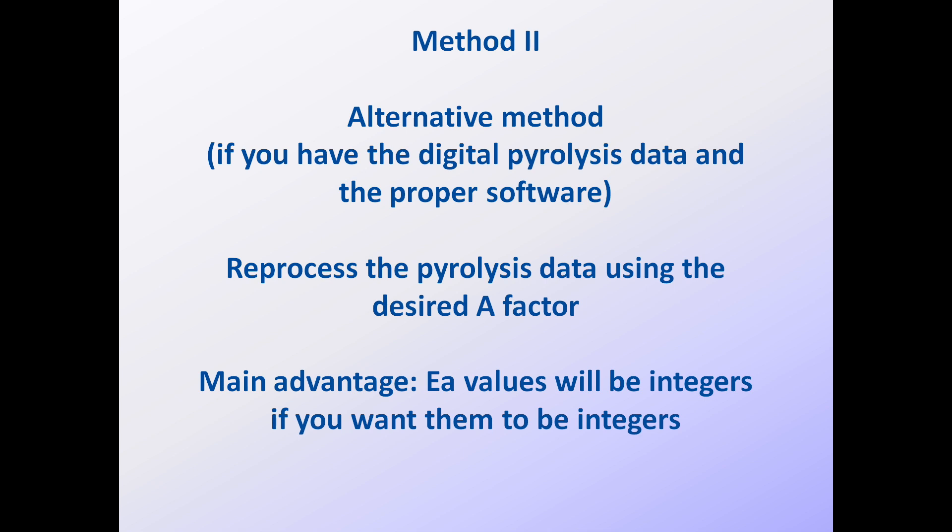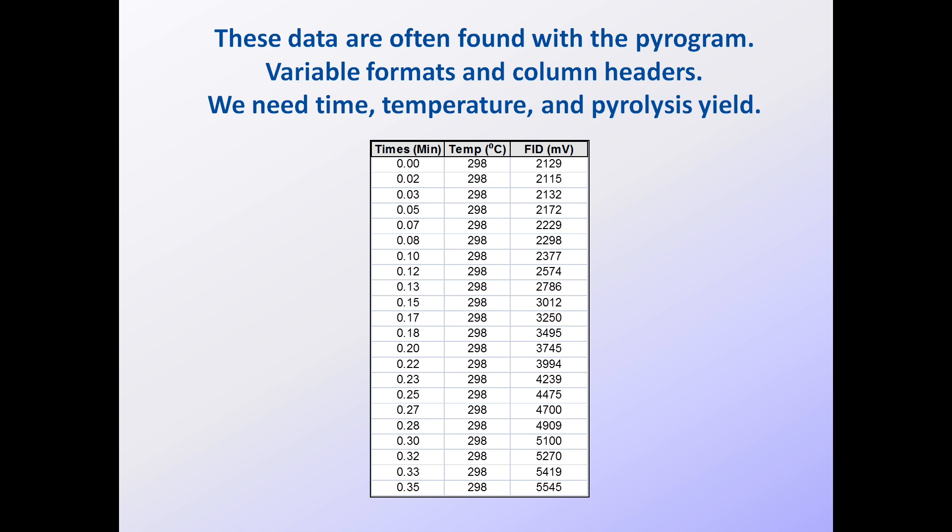The main disadvantages of the reprocessing method are that one must have both the digital data and access to appropriate software. This method normally cannot be used to change the A factor in published data or data taken from reports because of the absence of digital pyrolysis data. However, it may be applicable to some sets of archived pyrolysis data as well as to new data.